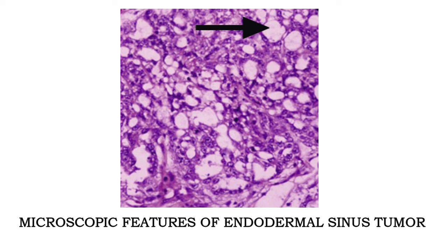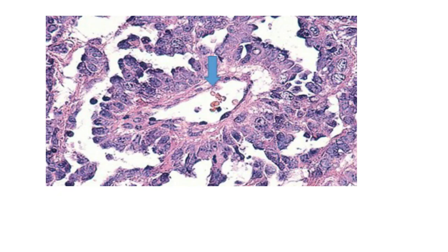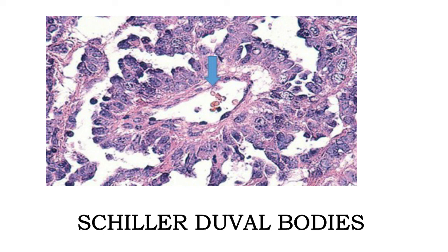This photograph shows microscopic features of yolk sac tumor. The black arrow points towards cells which are laden with glycogen or lipid, to be demonstrated on special staining. The red circle shows that the cells are not tightly packed as in other malignant tumors — there is a loose lace-like pattern. The most important structure is the Schiller-Duval body: there is a central blood vessel containing red blood cells, marked with a blue arrow, surrounded by malignant cells.